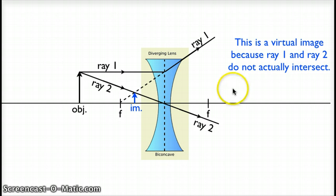That means if I want to see this image, I need to be over on the outgoing side of the lens and I need to look through the lens and I will see an image here. But if I were to put a piece of paper here or something to try and project this image, that would not work because it is a virtual image.